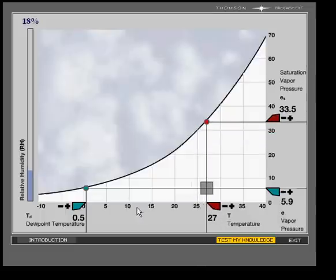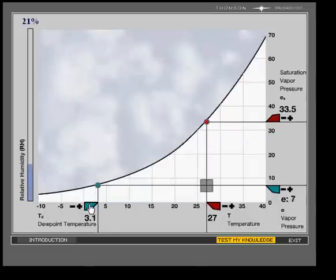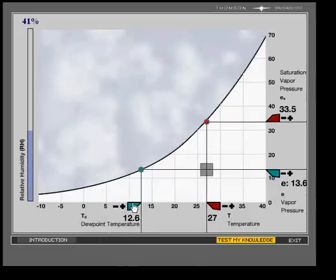And then the other one is this blue icon. This corresponds to the dew point temperature. And over here on the vertical, this is the actual vapor pressure in the air for that given dew point temperature.